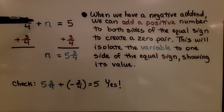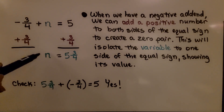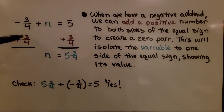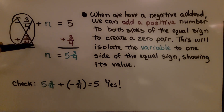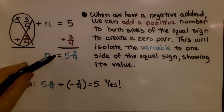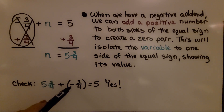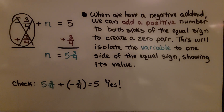Here we have negative three-fourths plus n is equal to five. When we have a negative addend, we can add a positive number to both sides of the equal sign to create a zero pair, which isolates the variable to one side of the equal sign. We add a positive three-fourths to create that zero pair and eliminate it. When we add three-fourths to five, we get five and three-fourths, so n is equal to five and three-fourths. We can check it: five and three-fourths plus negative three-fourths equals five. So yes, we did it correctly.